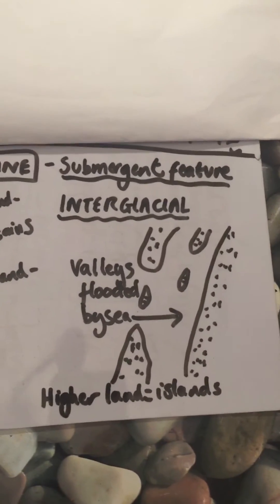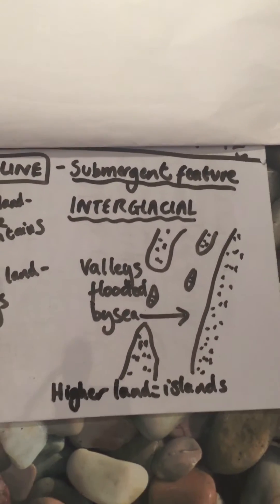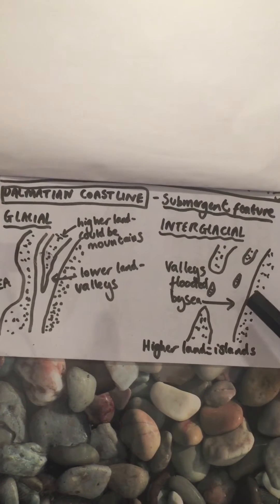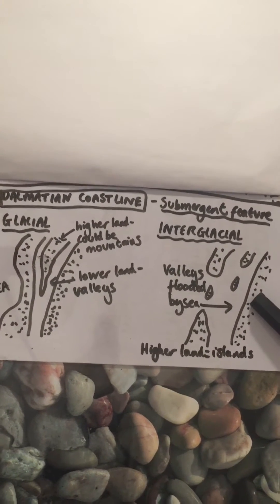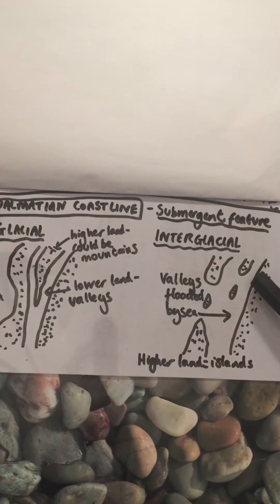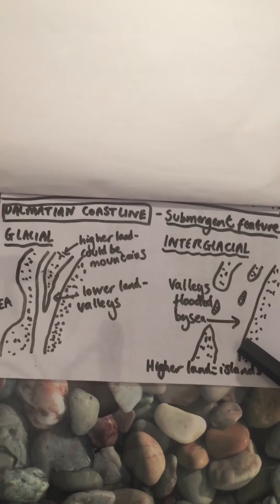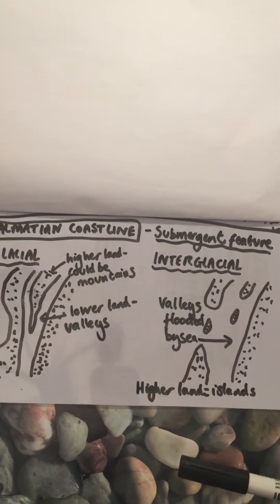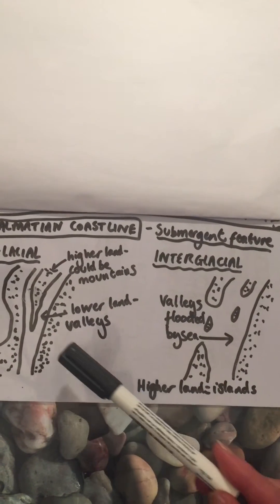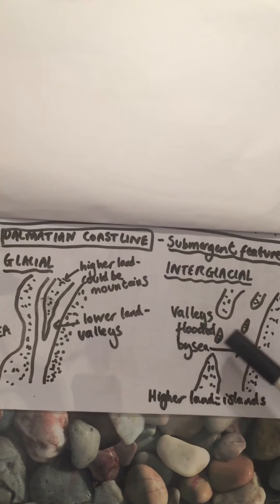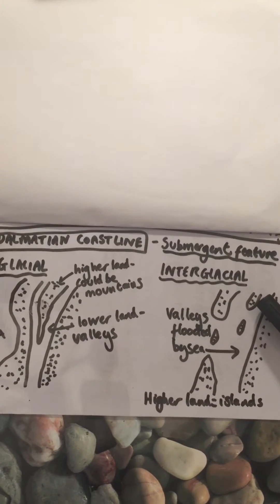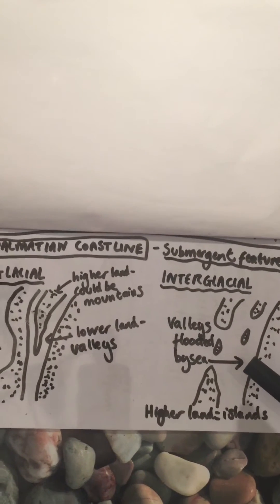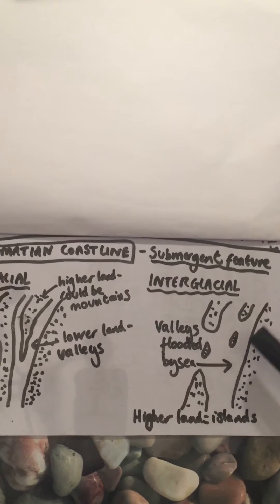Moving to the interglacial diagram - this bit of land here stays the same and becomes the main coastline. What you've then got off the coastline are lots of little islands. These islands are in fact the higher land - whatever was really high here still remains as land and becomes an island. The valleys in between are flooded by the sea. This is the Dalmatian coastline, because you get lots of little islands.